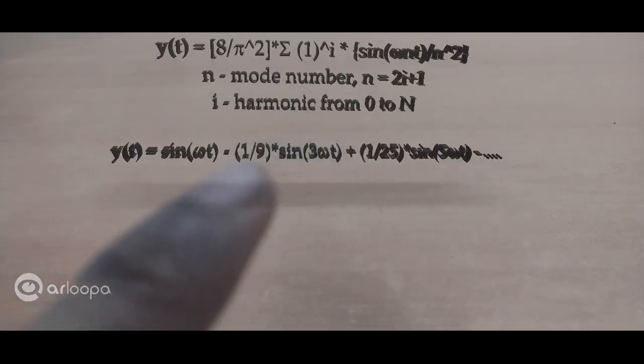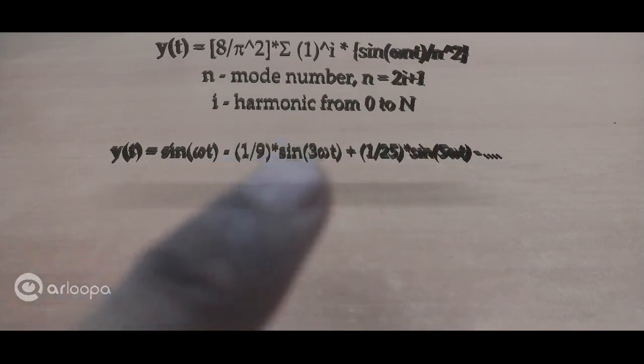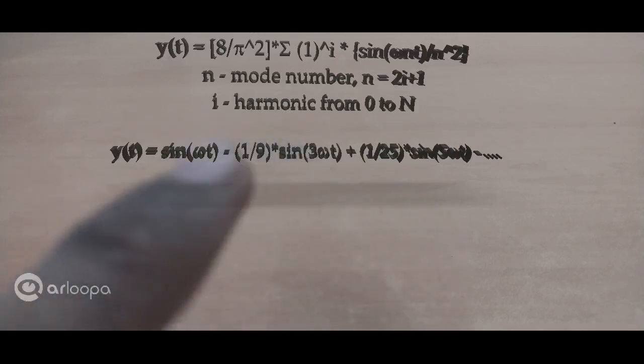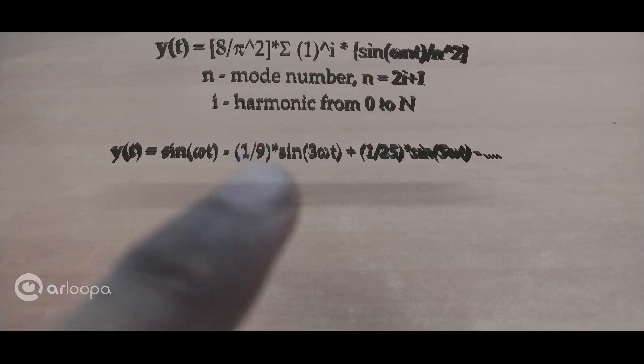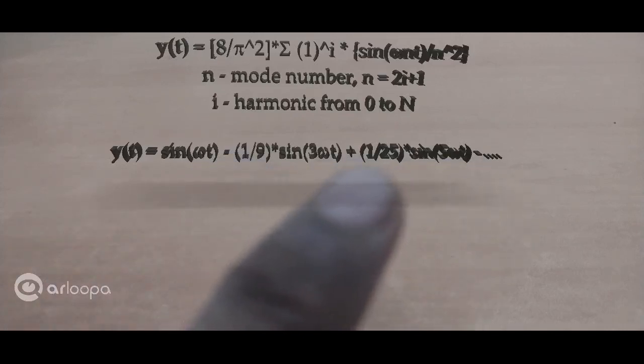So here, if you can observe, this is 1, 9, and 25, so this is nothing but the square of 3. So 9 is square of 3, and 25 is square of 5. So that is the amplitude, and the amplitude as the series progresses becomes smaller and smaller.